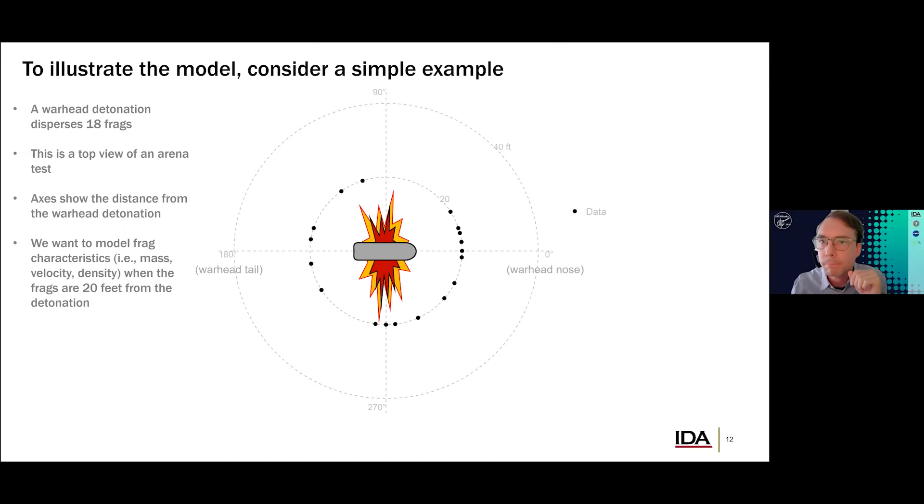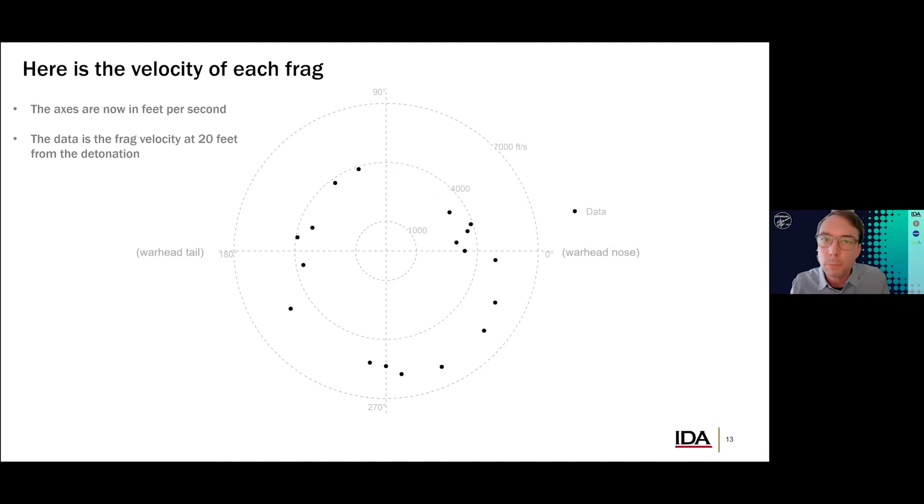So let's start with a contrived example. So this is a warhead detonation, which resulted in 18 fragments. Okay, so it's fake, but it does the job in terms of illustration. So we'll start by not plotting the fragments in three dimensions. So this is a two-dimensional graph of the fragments. Now, the axes of the graph show that the data were collected in relation to the nose of the warhead. So this is a warhead, which is at zero degrees. And in the case of these data, we made observations 20 feet from the detonation. So this is both a snapshot in time, and it is a spatial simplification of the full data problem, which I'll show you at the end of the talk.